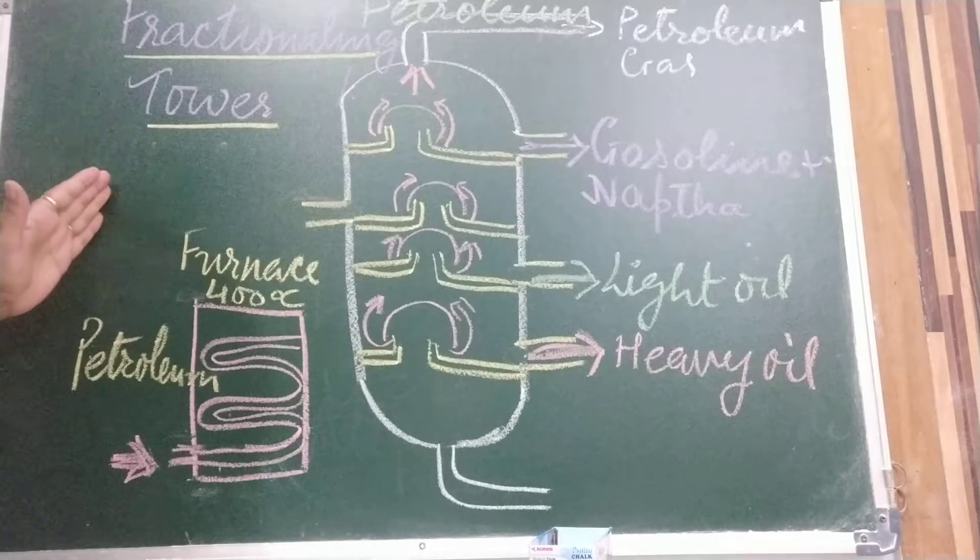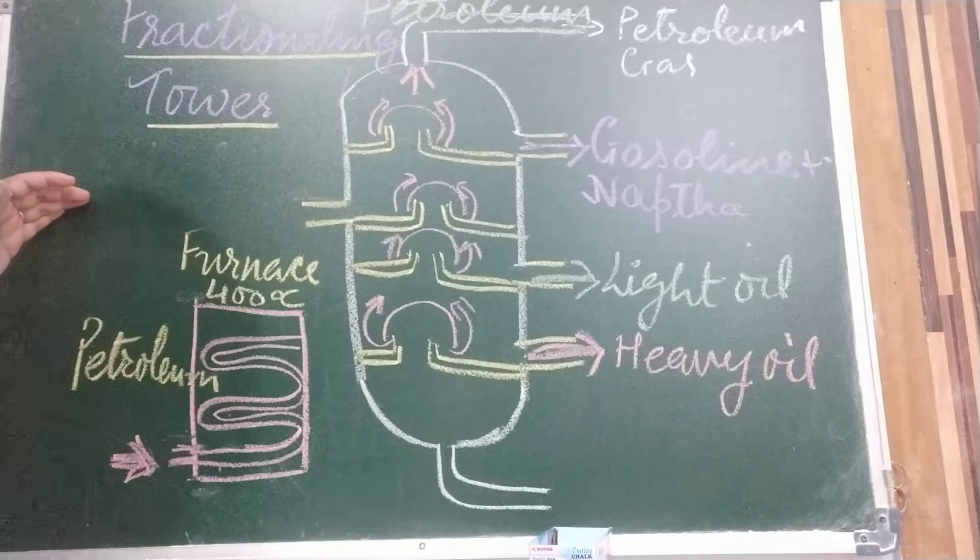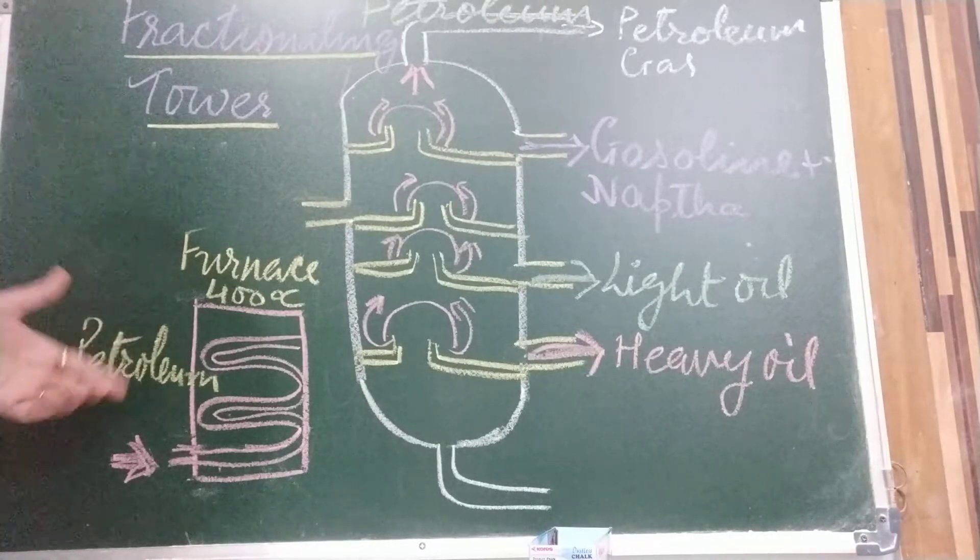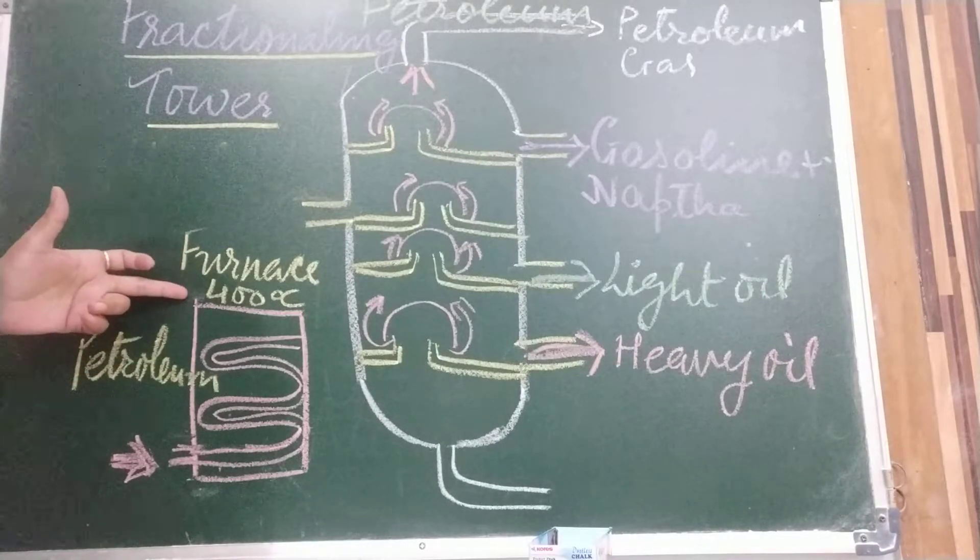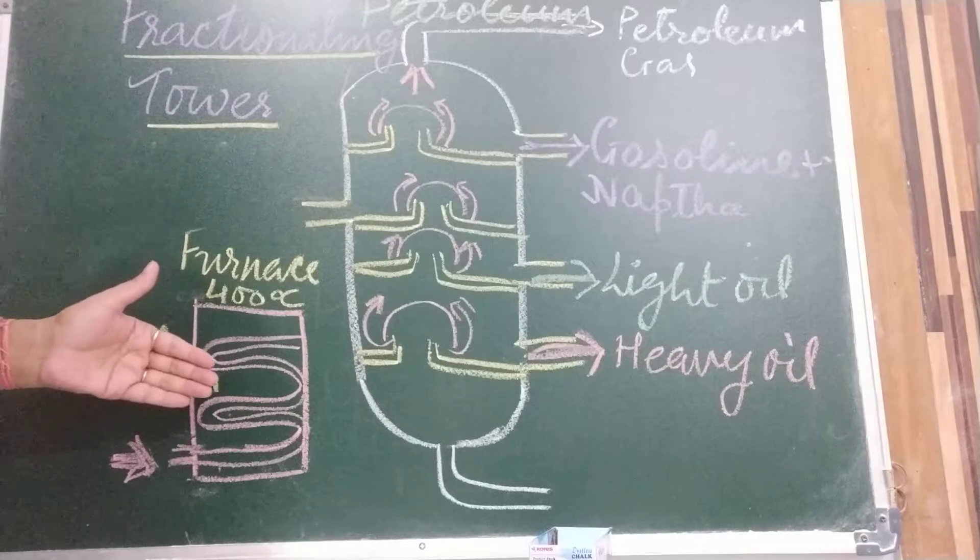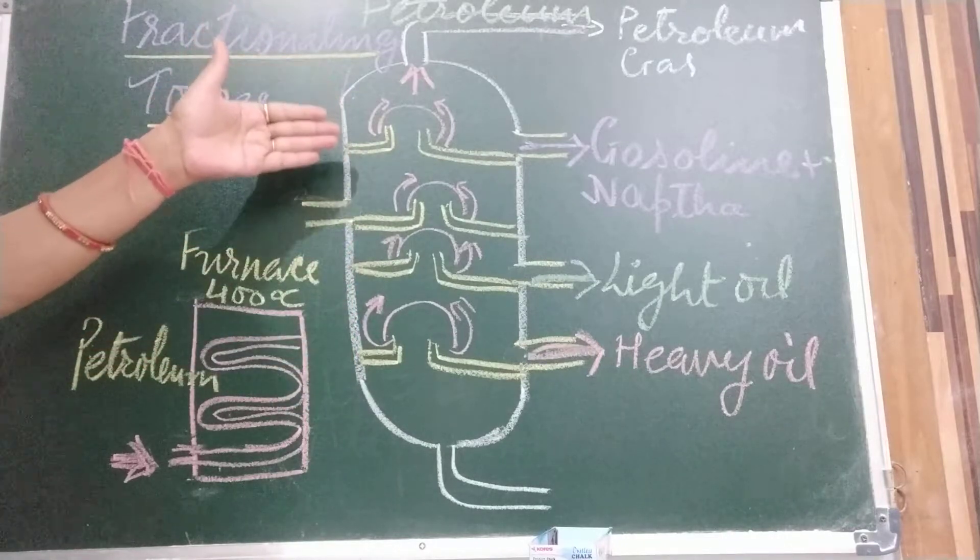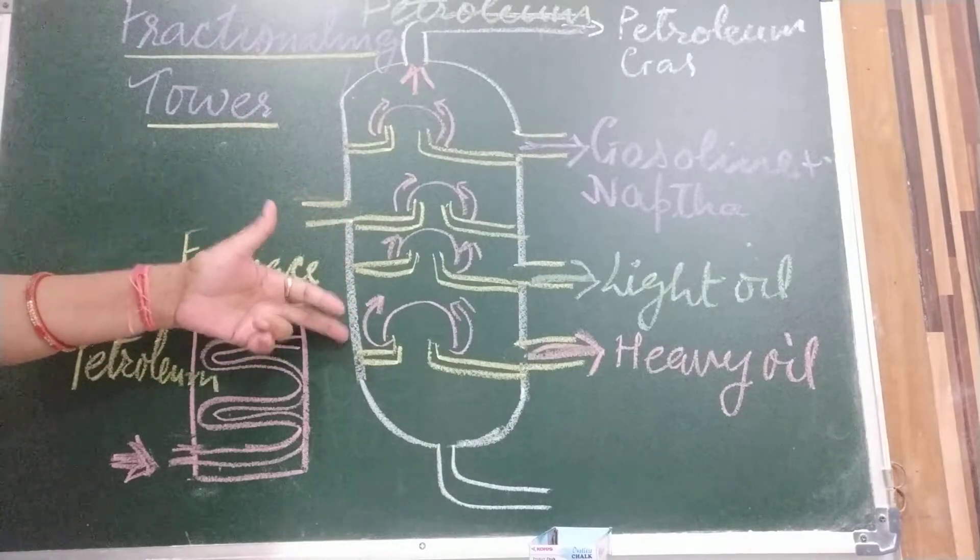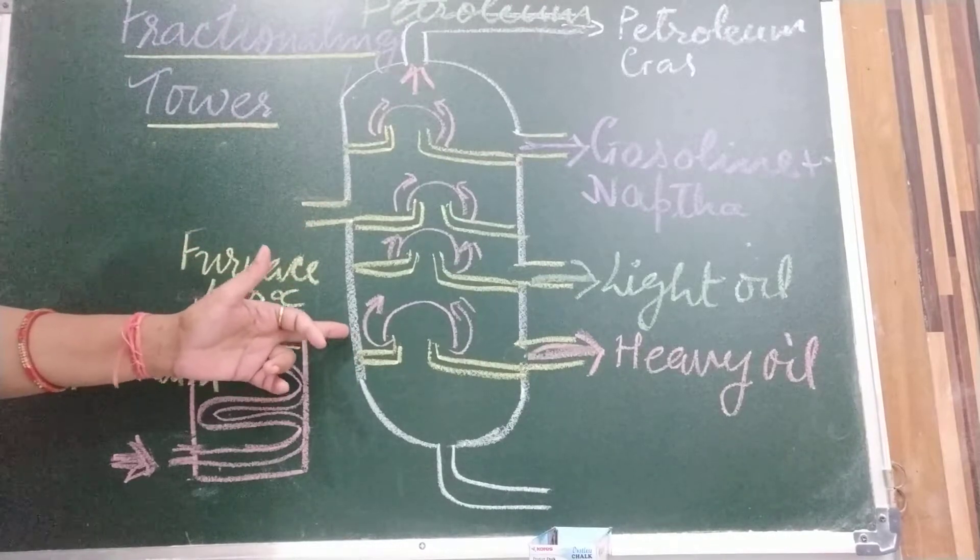So this process takes place in refineries. One of the refineries, Matra refinery and there are so many refineries are there. So this process carried out in petroleum refinery. Here, crude oil is first heated to about 400 degree Celsius in a furnace. This is furnace. The vapors formed are passed into tall fractionating tar. This is fractionating tar. The hydrocarbon with the highest boiling point condense first. Like according to boiling point, they are going up. Which is having highest boiling point, it condense first here.